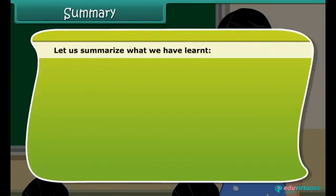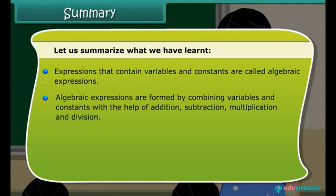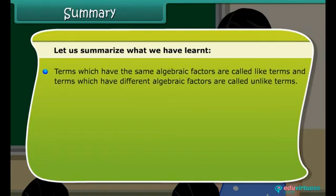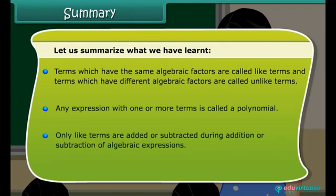Let us summarize what we have learned. Expressions that contain variables and constants are called algebraic expressions, formed by combining variables and constants using addition, subtraction, multiplication, and division. Expressions are made up of terms, and a term is a product of factors. The coefficient is the numerical factor in the term. Terms with the same algebraic factors are like terms; those with different algebraic factors are unlike terms. Any expression with one or more terms is a polynomial. Only like terms are added or subtracted during addition or subtraction of algebraic expressions.